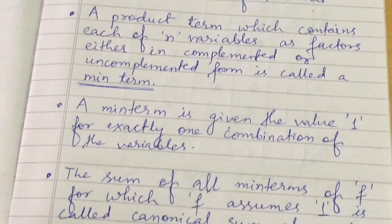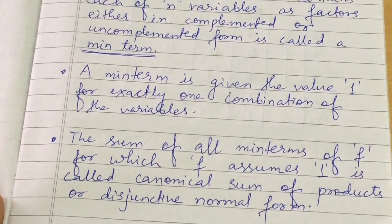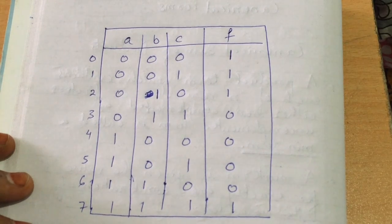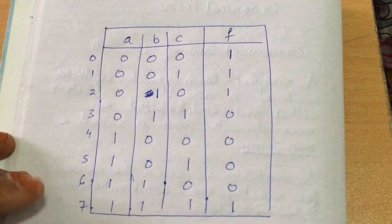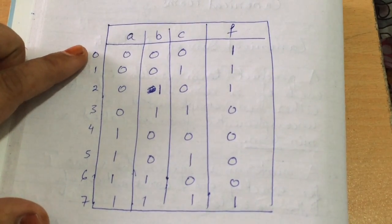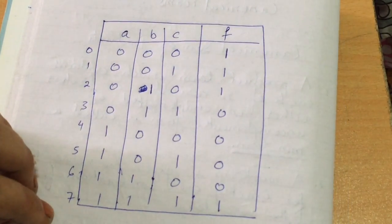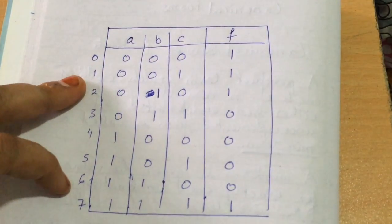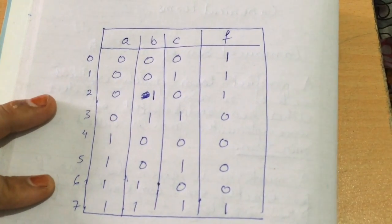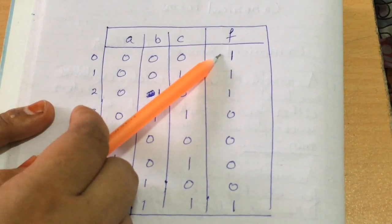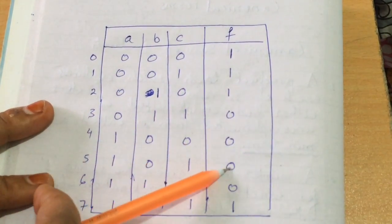Let's take this example. A table is given with three boolean variables A, B, and C. Since there are three variables, we can have eight combinations from 0 to 7. These are the binary equivalents of the numbers 0 through 7. Suppose the function output f is given as: 1, 1, 1, 0, 0, 0, 0, 1.